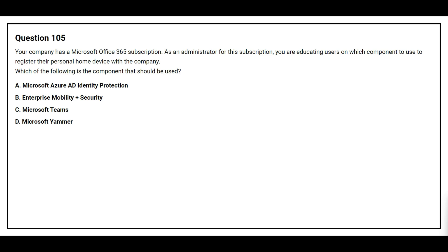Question 105. Your company has a Microsoft Office 365 subscription. As an administrator for this subscription, you are educating users on which component to use to register their personal home device with the company. Which of the following is the component that should be used? Option A: Microsoft Azure AD Identity Protection. Option B: Enterprise Mobility plus Security. Option C: Microsoft Teams. Option D: Microsoft Yammer. The correct answer is Option B, Enterprise Mobility plus Security.